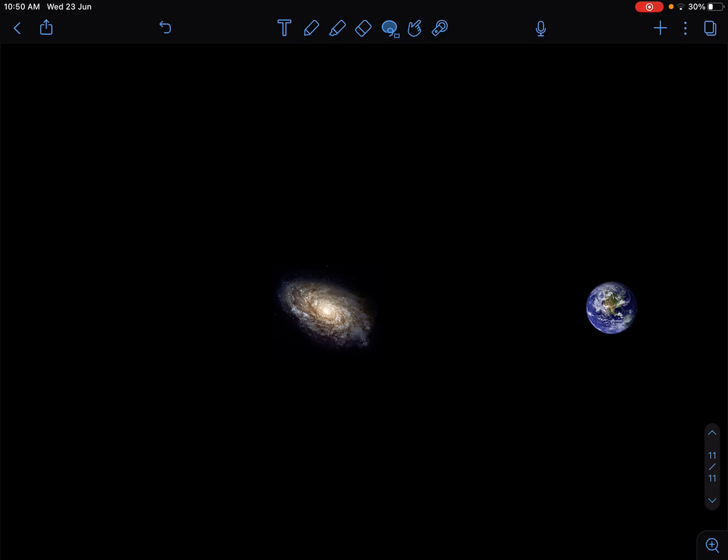Imagine you've got a galaxy and the Earth. Now, the galaxy is emitting light because the galaxy is made of stars, and so the galaxy is emitting light with a particular wavelength.